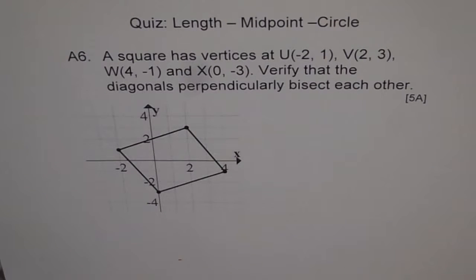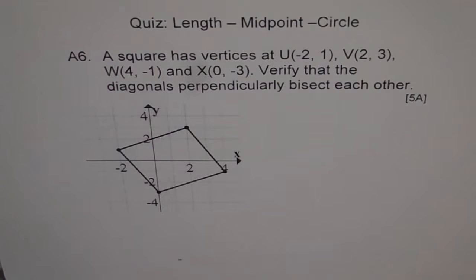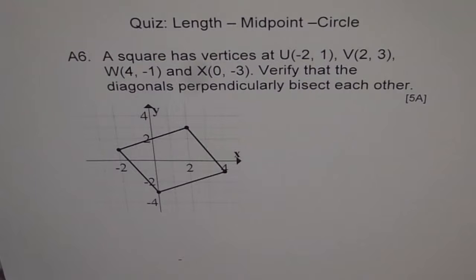A6 is an application problem. A square has vertices at U(-2, 1), V(2, 3), W(4, -1), and X(0, -3). Verify that the diagonals perpendicularly bisect each other. Try to do this problem and then check the solution.